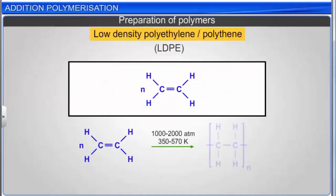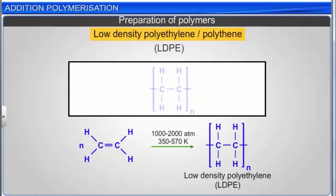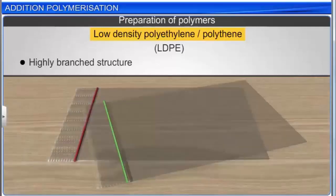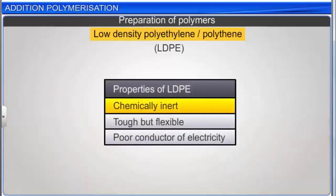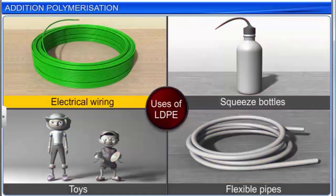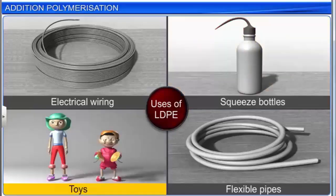LDPE is a highly branched structure where the branches may also have side chains. The branches keep the chains from packing closely together, so the resulting plastic is soft. LDPE is chemically inert, tough but flexible, and a poor conductor of electricity. LDPE is used to make insulation for electrical wiring, squeeze bottles, toys, and flexible pipes.